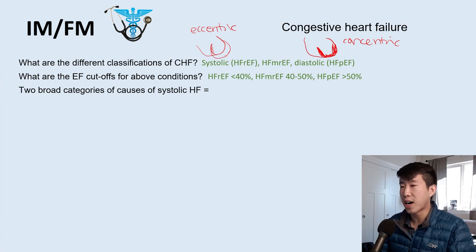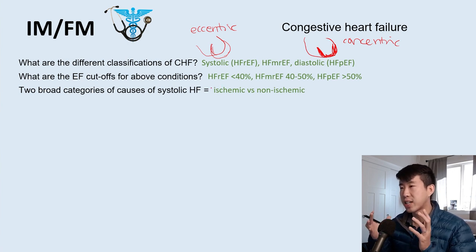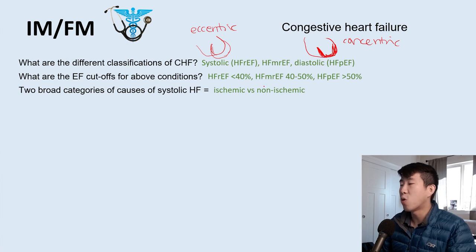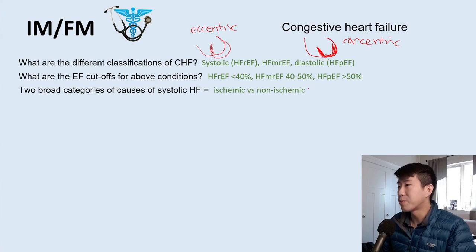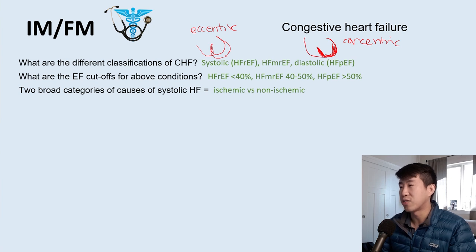Two broad categories of systolic heart failure: ischemic versus non-ischemic cardiomyopathy. Ischemic is the patient with hypertension, smoking, obesity, diabetes who has a heart attack and now has a weakened heart muscle. Non-ischemic is typically drug-induced cardiomyopathy or viral cardiomyopathy. Treatment approaches also differ based on etiology.